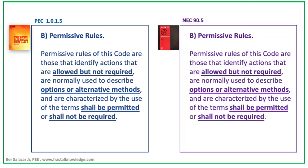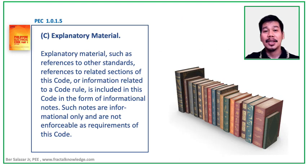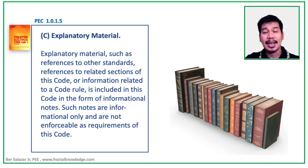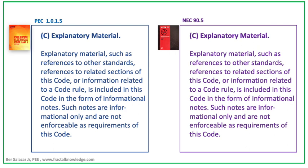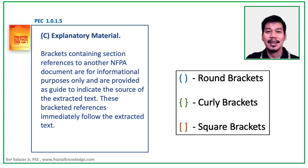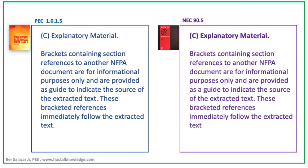A similar statement also appeared in the National Electrical Code. For PEC Section 1.0-1.5, Explanatory Material, it states that explanatory material — such as references to other standards, references to related sections of this code, or information related to a code rule — is included in this code in the form of informational notes. Such notes are informational only and are not enforceable as a requirement of this code. Similarly, NEC Section 90.5, Paragraph C states that bracketed information containing references to other NFPA documents is for informational purposes only and was provided as a guide to indicate the source.